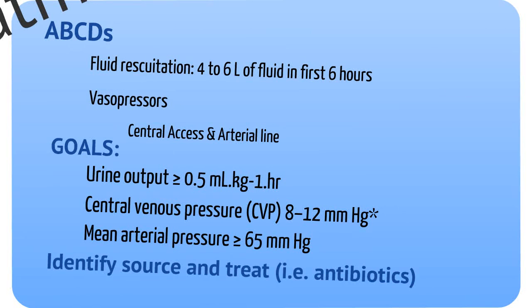At this time, you should think about central access and the placement of an arterial line to monitor blood pressures. The Surviving Sepsis Campaign provided goals for both fluid resuscitation and sepsis management: a urine output greater than or equal to 0.5 mL per kg per hour, a central venous pressure from 8 to 12 mmHg, and a mean arterial pressure greater than or equal to 65.